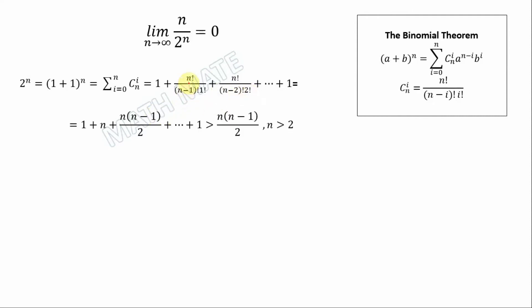Here we can write n factorial as n minus 1 factorial multiplied by n. And n minus 1 factorial we can cancel, and here remains only n.